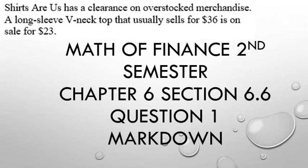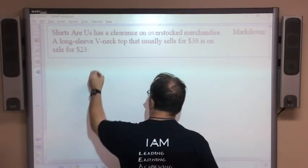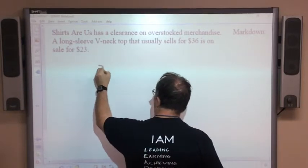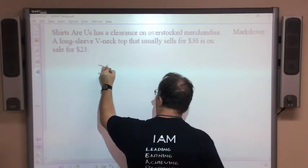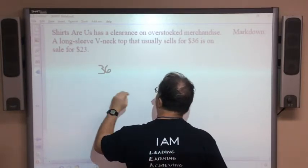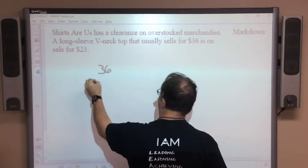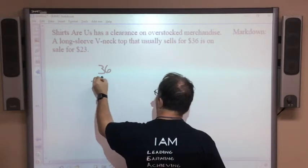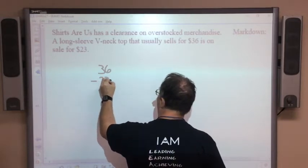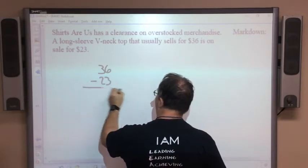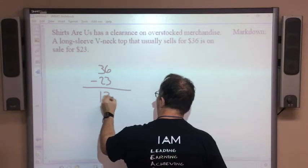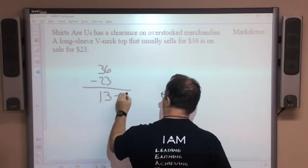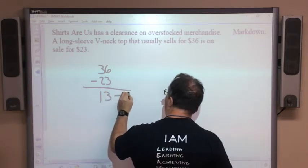We're talking about chapter 6, section 6.6 — markdown. Markdown is basically how much you are saving from the original price. The original price is thirty-six dollars, and the new sale price, which is what we paid, is twenty-three dollars.